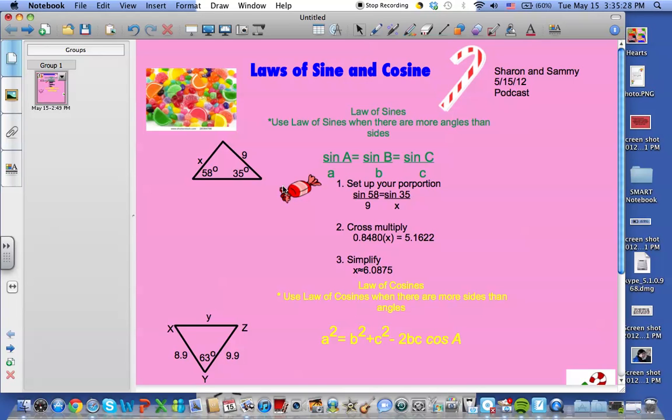Number two, we should cross-multiply, so the sine of 58 would be about 0.8480 times X equal to 5.1622, and after we simplify, we get X is about 6.0875.